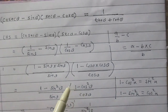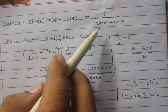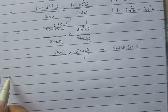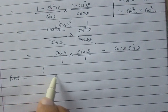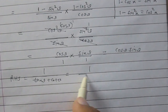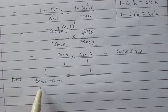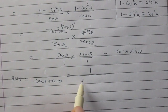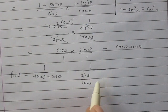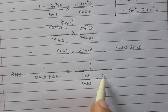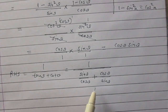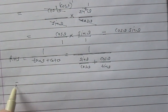Now consider the right-hand side: 1 divided by tan θ plus cot θ. We know that tan θ is equal to sin θ upon cos θ, and cot θ is cos θ upon sin θ. So the right-hand side is 1 divided by sin θ/cos θ plus cos θ/sin θ.